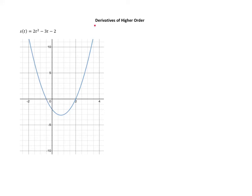In this lesson, we're going to talk about derivatives of higher order and what that means. Here I have a function s of t is equal to 2t squared minus 3t minus 2, and it's represented by this graph. If we want to find the derivative of this function, we would say s prime of t is equal to 4t minus 3.